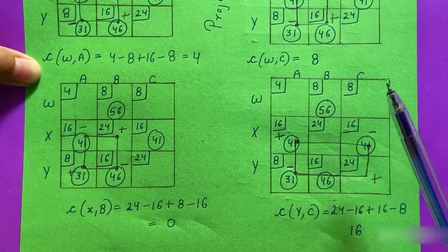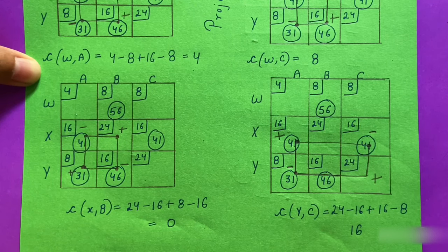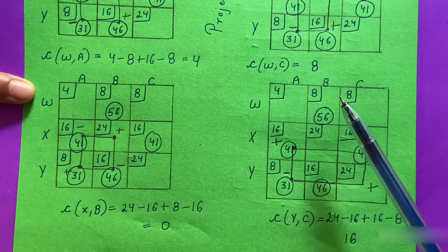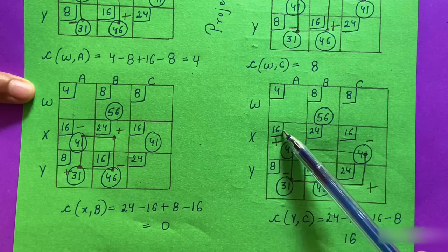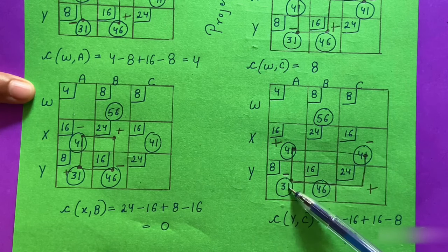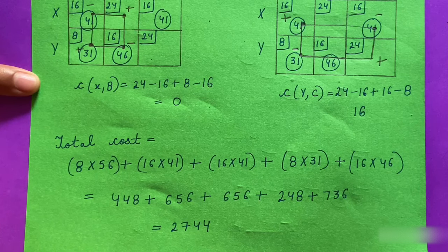Since all improvement indices are positive or zero, we have reached the optimal solution. The optimal cost of transportation is calculated from the final improved matrix: 8×56 + 16×41 + 16×41 + 8×31 + 16×46. This was all about the stepping stone method for finding the optimal solution of a transportation problem; the next video will cover a new topic.